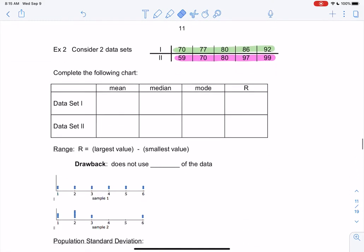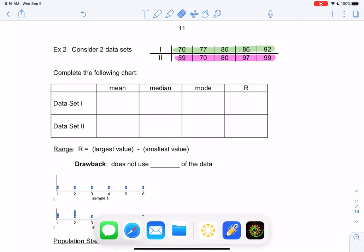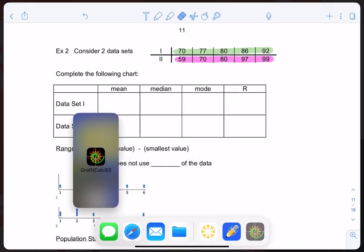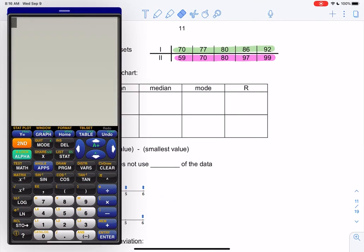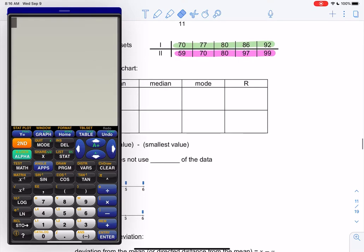So let's look at two data sets. They're just numbers. I'm looking at small data sets just while we practice, and then we'll look at real data. But in green, I have 70, 77, 80, 86, and 92. And then in pink, I have another data set: 59, 70, 80, 97, and 99. So you can think of these as maybe these are five test scores in a class or something. It's just practicing. So let's find the mean, median, mode, and then we'll talk about the new stuff.